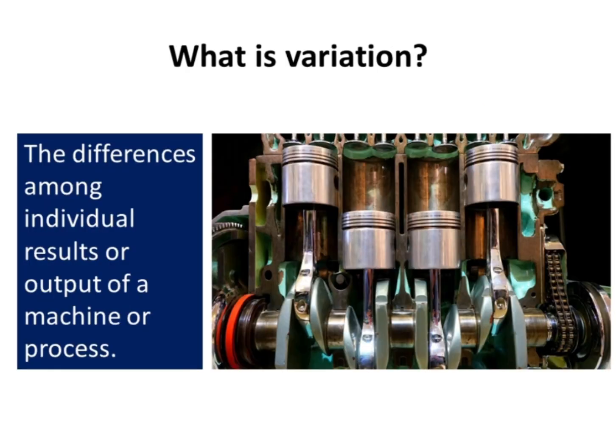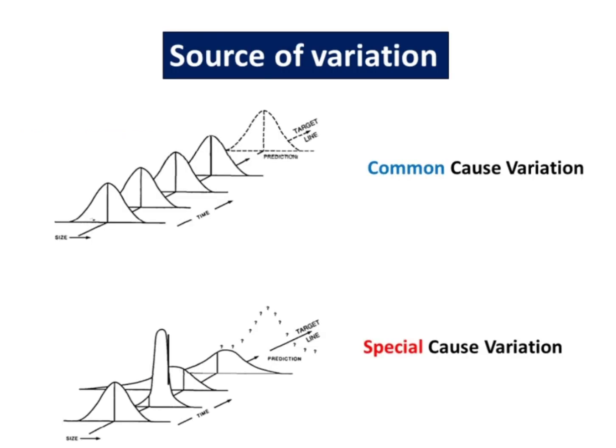What is variation? No two products or characteristics are exactly alike, because any process contains many sources of variability. The differences among products may be large or they may be immeasurably small, but they are always present. Variation is the differences among individual results or output of a machine or process. There are two types of variation: common cause and special cause variation.